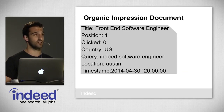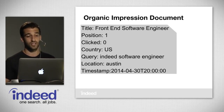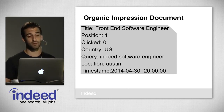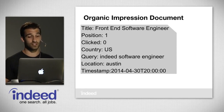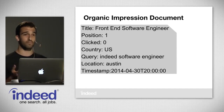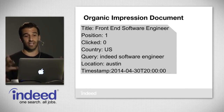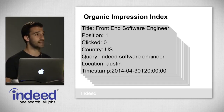Taking a closer look at that impression: it's for front-end software engineer for new product at Indeed in Austin. For these impressions we actually have an index. Things we want to look at include: the title — what job titles did job seekers see; the company information — what companies showed up; the description — the snippet of information shown; and the job age — how old were the jobs. We actually log a lot more than just this, but here's a basic organic impression document: title 'frontend software engineer,' position one, whether it was clicked, country US, query 'Indeed software engineer,' location Austin, and timestamp.